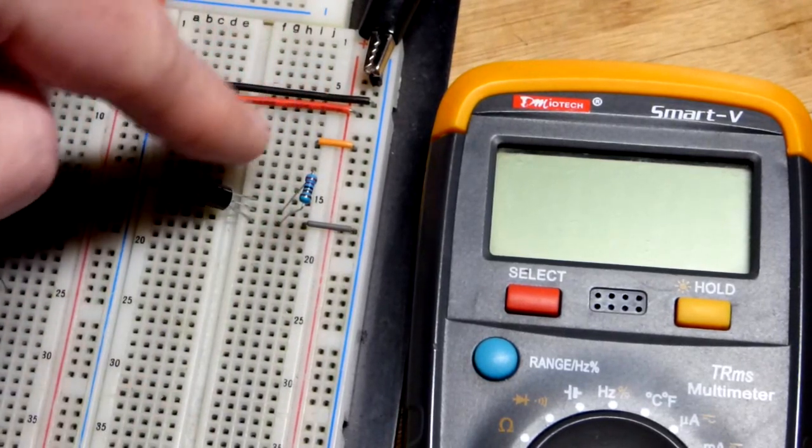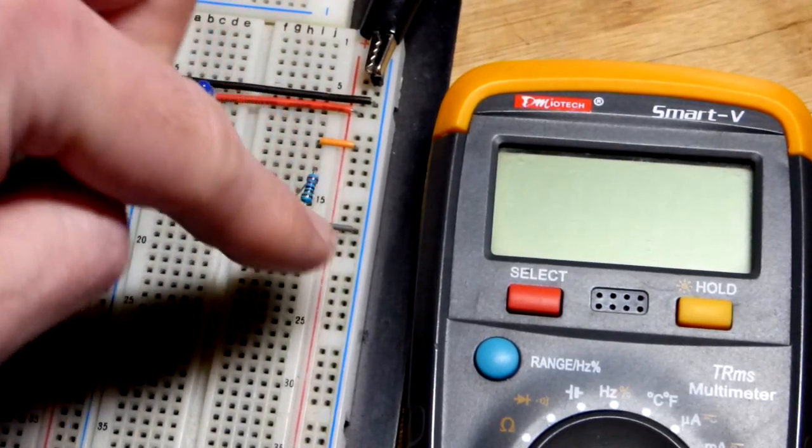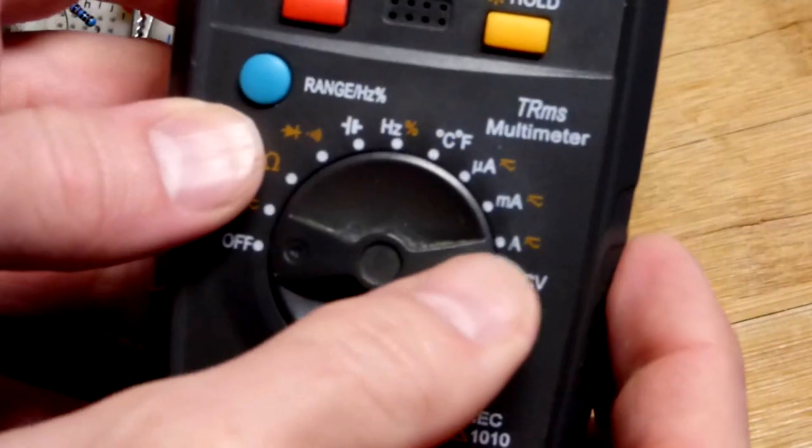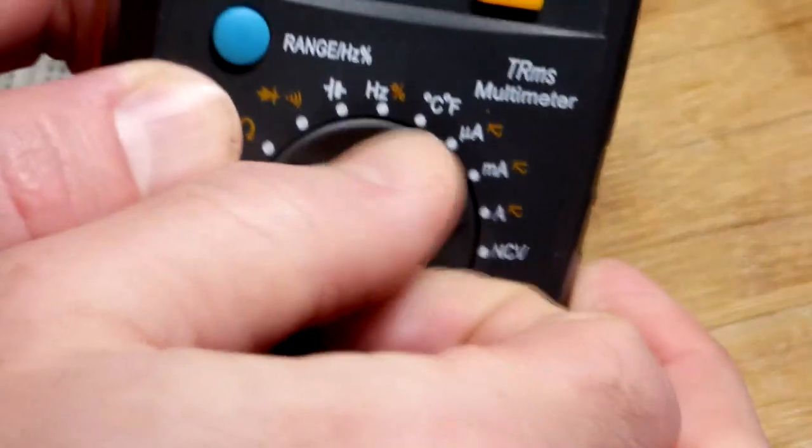So we got the resistor there. The current flows through a drain to a source right there. But we're going to keep this video simple. Those are all topics to study about in more detail.